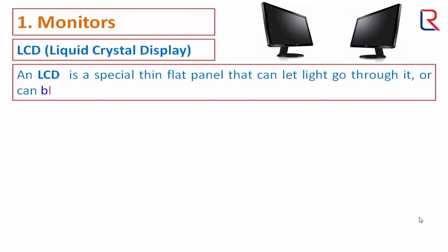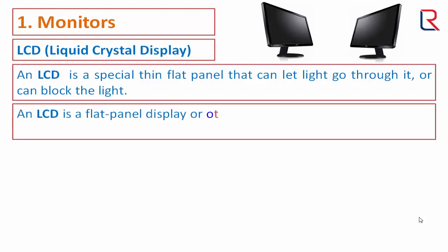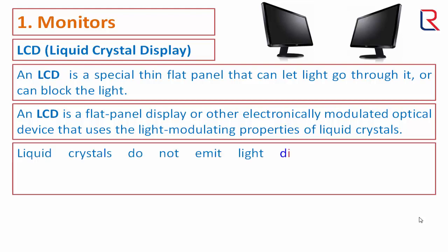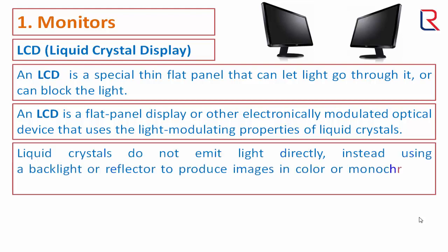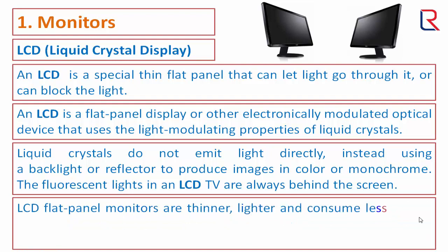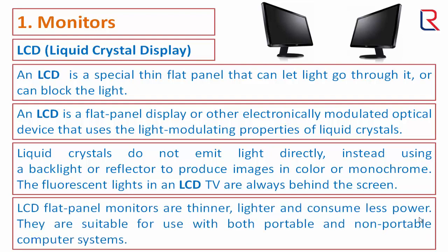LCD: An LCD is a special thin flat panel that can let light go through it or can block the light. It is a flat panel display that uses the light-modulating properties of liquid crystals. Liquid crystals do not emit light directly; instead they use a backlight or reflector to produce images in color or monochrome. The fluorescent lights in an LCD TV are always behind the screen.